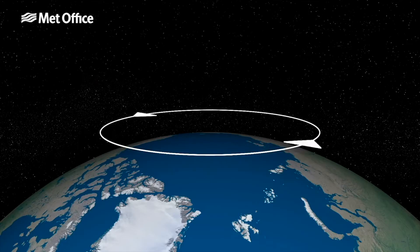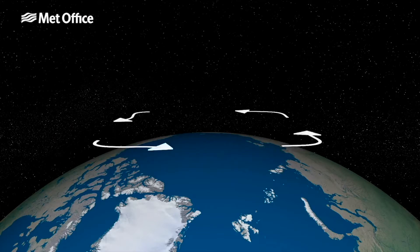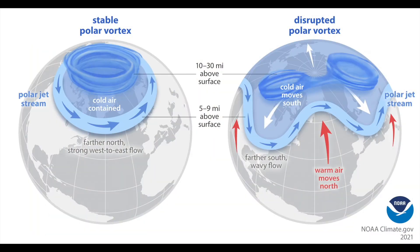Another key difference: the polar vortex only forms in the winter, while the jet stream is around year-round. The reason we care about the polar vortex is that the strength of its winds can influence the jet stream below it, sometimes for weeks at a time. For example, sometimes in winter the polar vortex winds slow way down or even reverse direction entirely, and when this happens it can make the jet stream slow down and move south, bringing cold Arctic air with it.